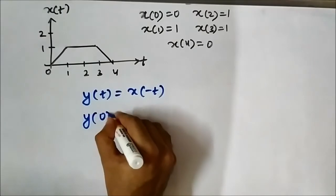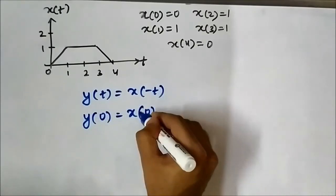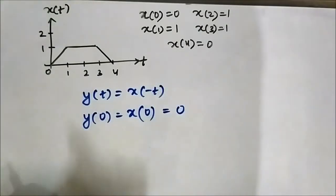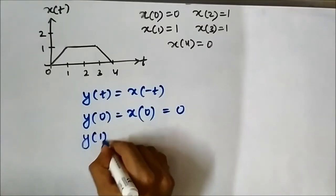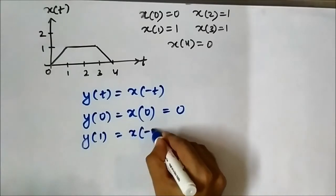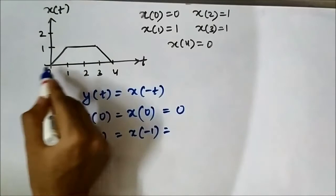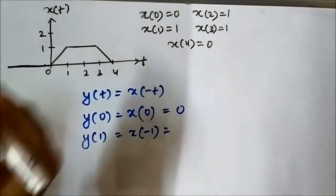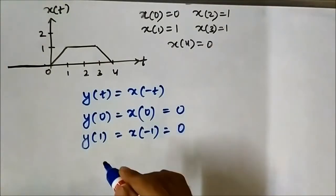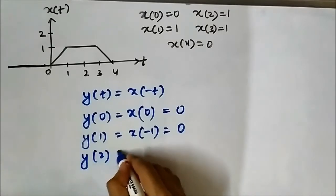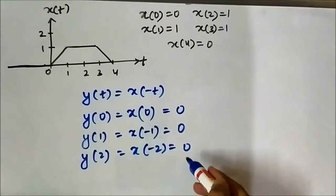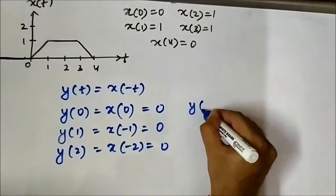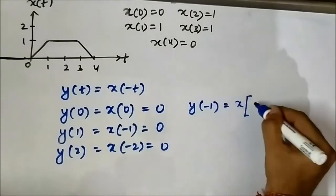Starting at t=0: y(0) = x(-0) = x(0) = 0. At t=1: y(1) = x(-1), and since there is no signal in the negative direction, it is 0. Similarly, y(2) = x(-2) = 0, and y(3) = x(-3) = 0. So in the positive t direction, all values are 0.